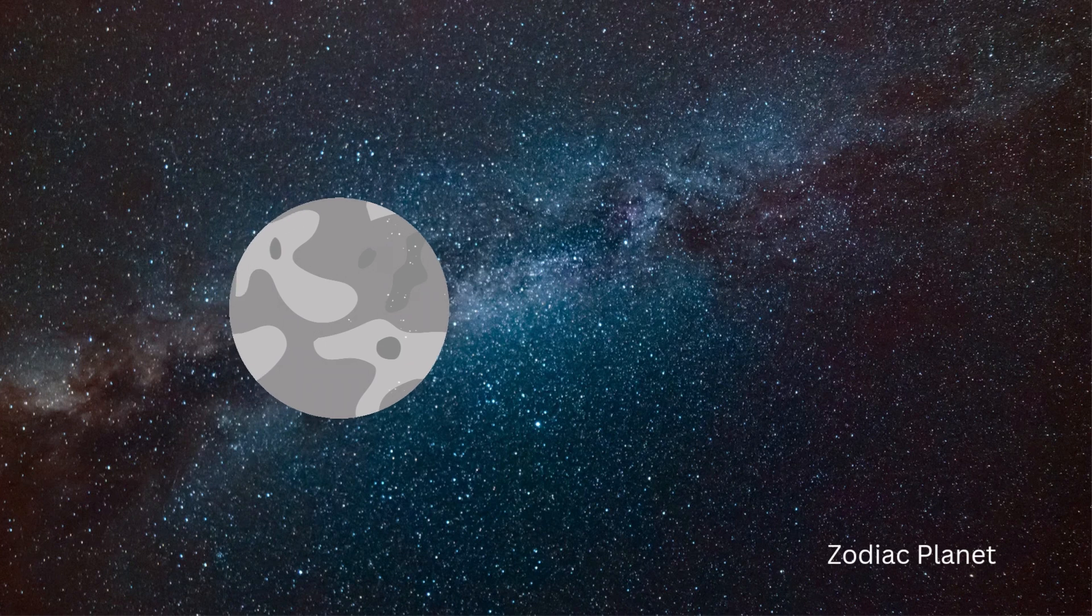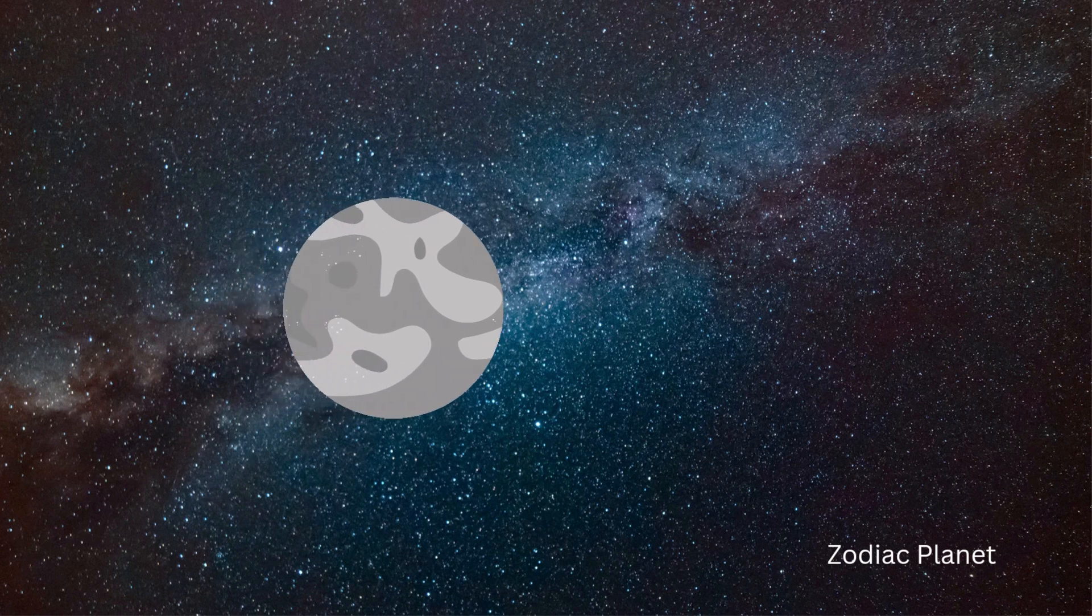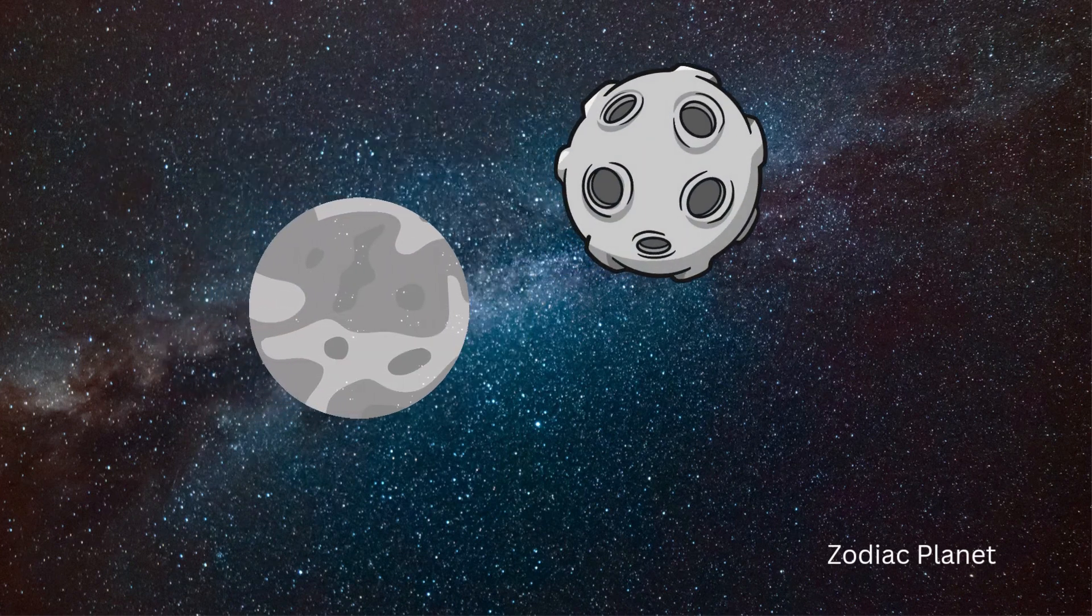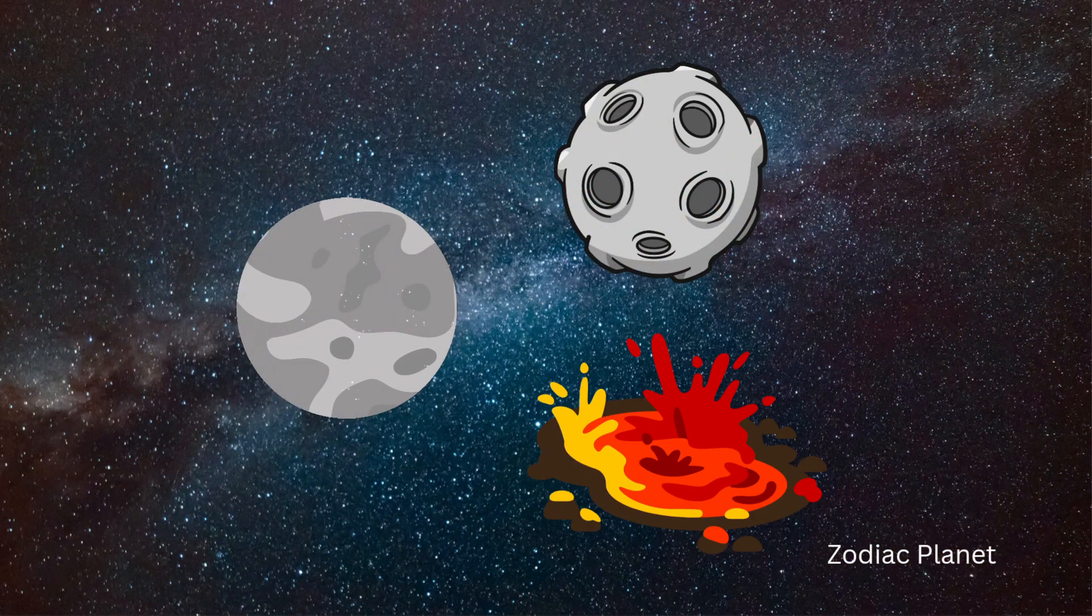It is the second densest planet after Earth, with a rugged surface composed of craters, ridges and ancient lava planes.